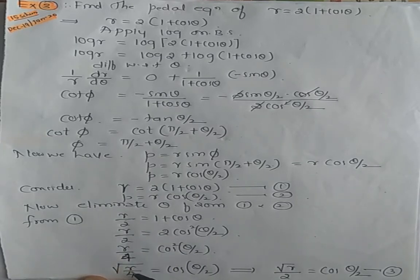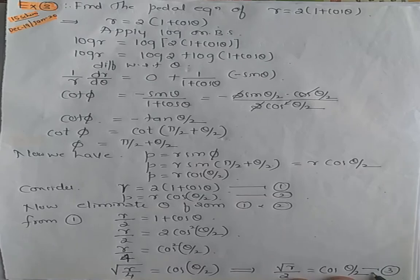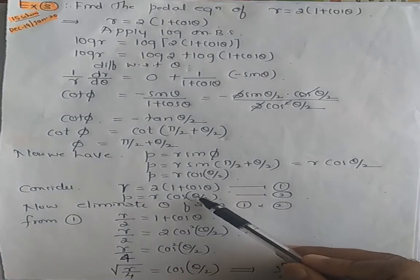Transferring this square to this side, square root of r divided by 4 cos theta by 2. That implies square root of r is square root of r, square root of 4 is 2, so equals cos theta by 2. I will call this as equation number 3.